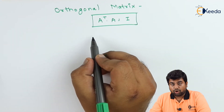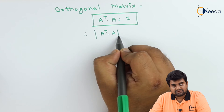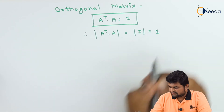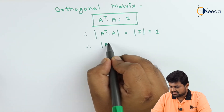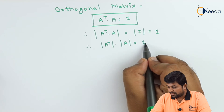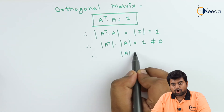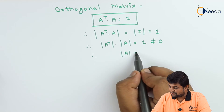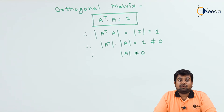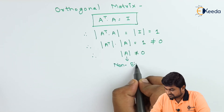Let us take the determinant of A-transpose into A. The mod of A-transpose into A equals mod of I, which is 1. So the determinant of A-transpose times the determinant of A equals 1, which is not equal to zero. Therefore, the determinant value of A must not be equal to zero — this is called a non-singular matrix.